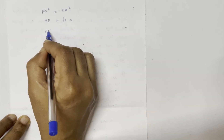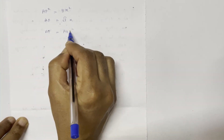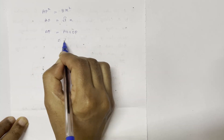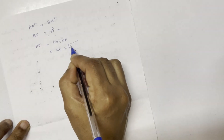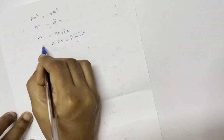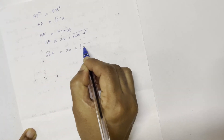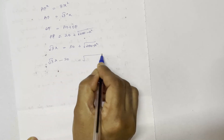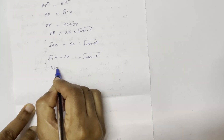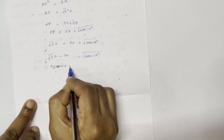We will calculate AP using AP equals AO plus OP. So AP squared equals AO plus OP, and this value equals 3x squared. Therefore AP equals root 3 times x.